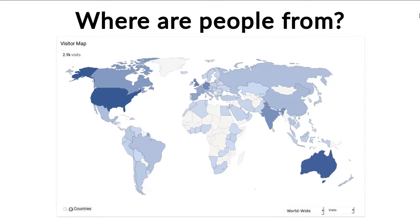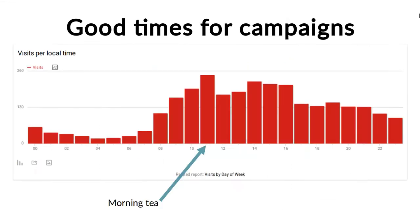Oftentimes we also want to know when we can start a campaign or when people are on the site so that we can reach them. Matomo gives you that information — when is actually a good time for a campaign, or when is it a good time to send people an email and see that they almost immediately look at that content and go for a course or some professional development? For this site here as an example, a very good time would be around morning tea, because that is when there is a spike in usage.